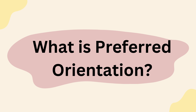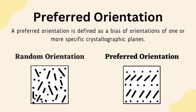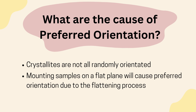What is preferred orientation? The preferred orientation is defined as a bias of orientations of one or more specific crystallographic planes. The causes of preferred orientation are: crystallites are not all randomly orientated, and mounting samples on a flat plane which will cause preferred orientation due to the flattening process.